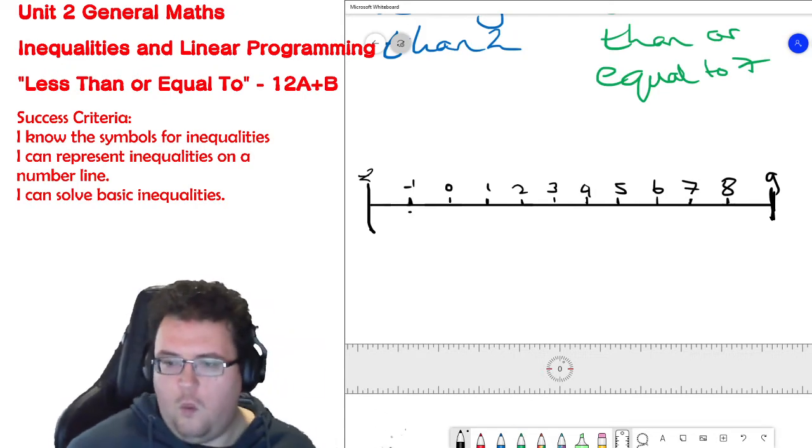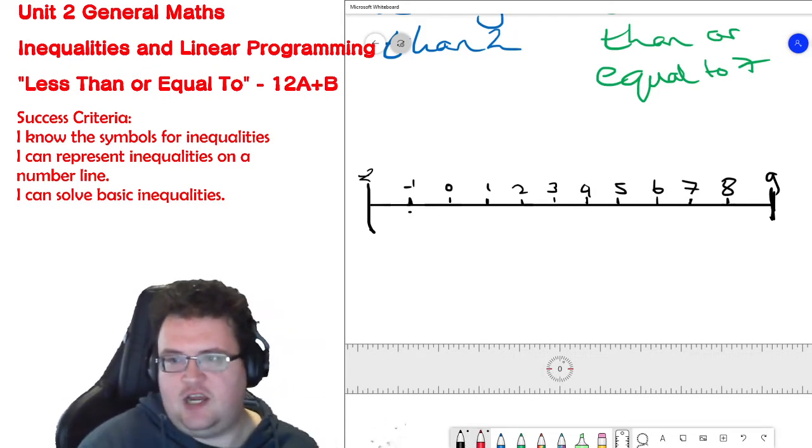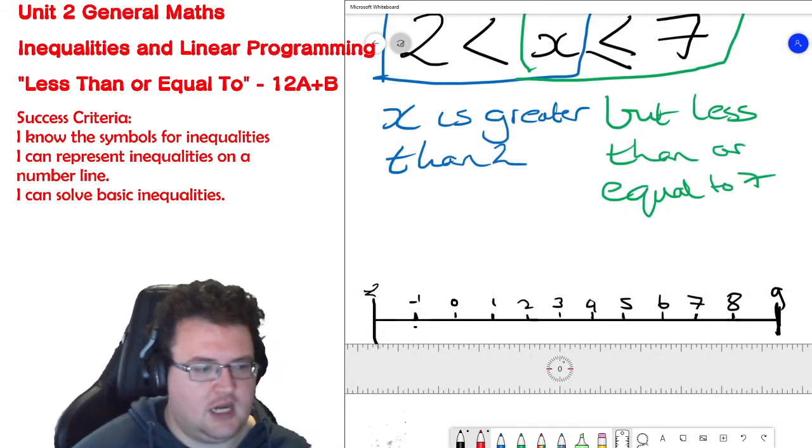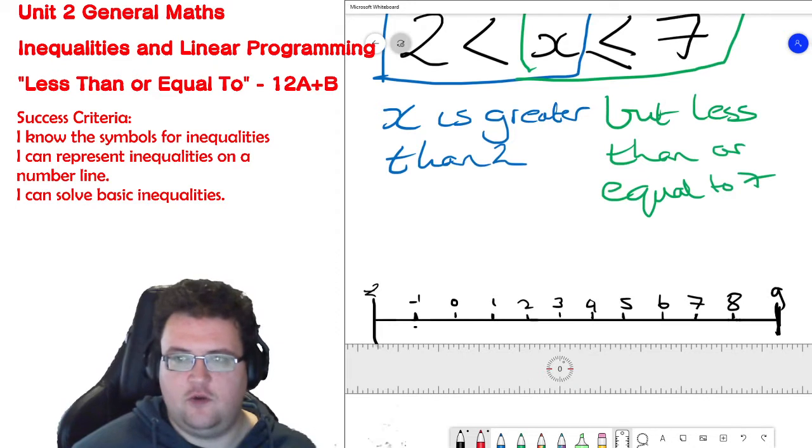Obviously not spaced out properly because my ruler doesn't want to bloody work, but we can represent, for example, this inequality up here on a number line. So what we have to do is we have to look at the types of symbols that we're using.